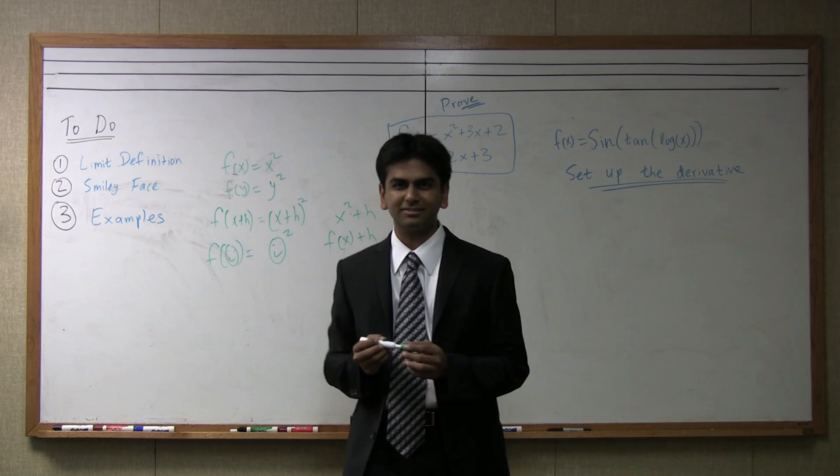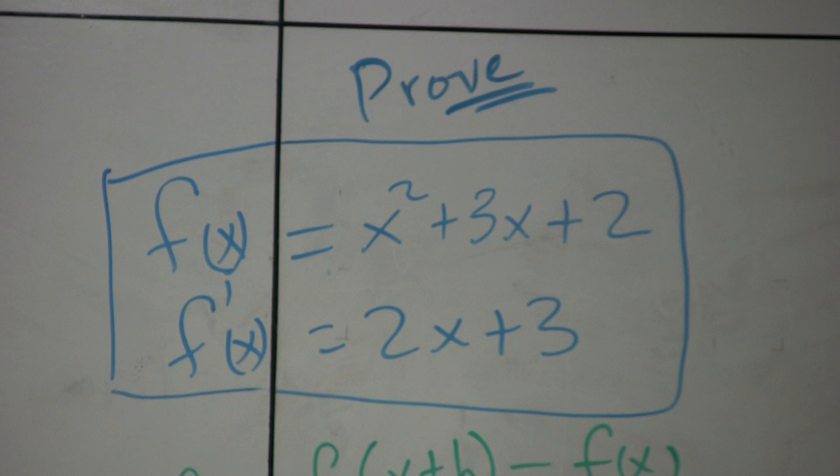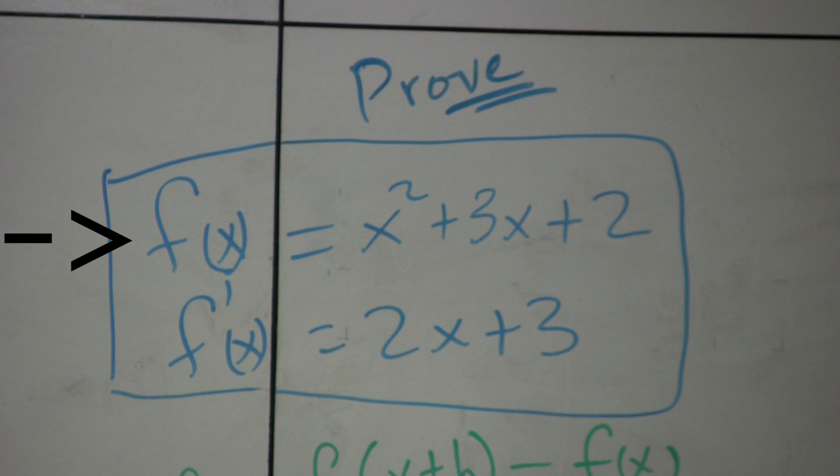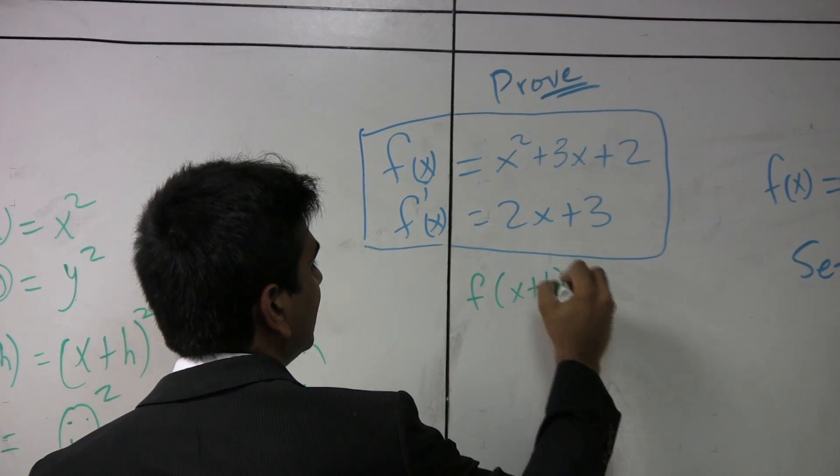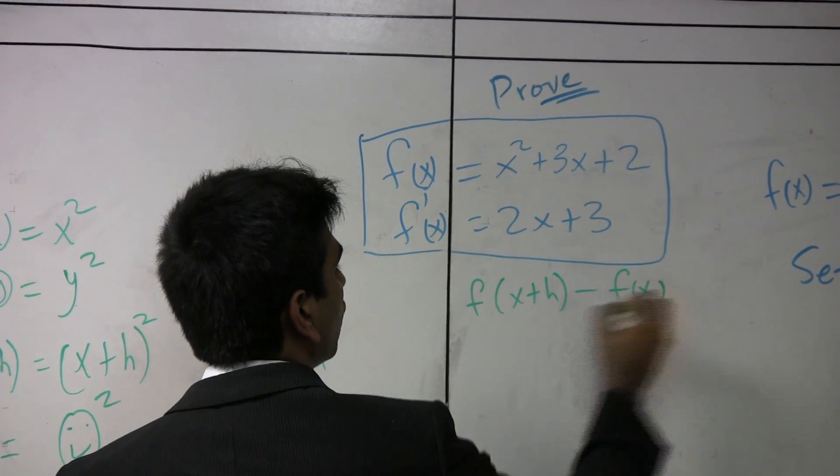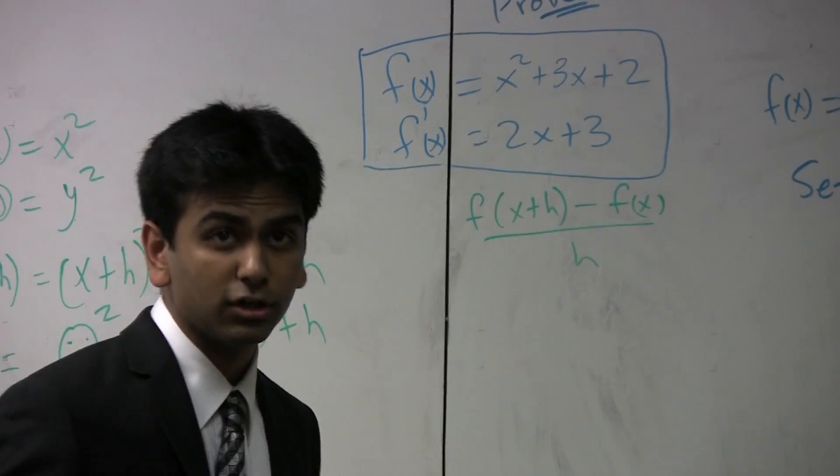Now, let's look at a few examples. Let's say we have to prove that the derivative of this guy is this guy, using the limit definition of a derivative. Well, we know that the limit definition was f of x plus h minus f of x over h as h goes to 0.